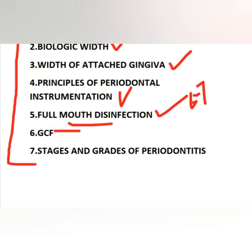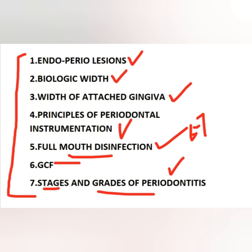The sixth topic is GCF (gingival crevicular fluid). Many students are confused about whether it is a transudate or an exudate — it is both. In a pro-inflammatory state it is a transudate; in an inflammatory state it is an exudate. Also learn the methods to collect GCF. The seventh topic is the stages and grades of periodontitis under the 2017 classification: four stages based on severity and complexity, and three grades based on risk modifiers like diabetes and smoking habits.